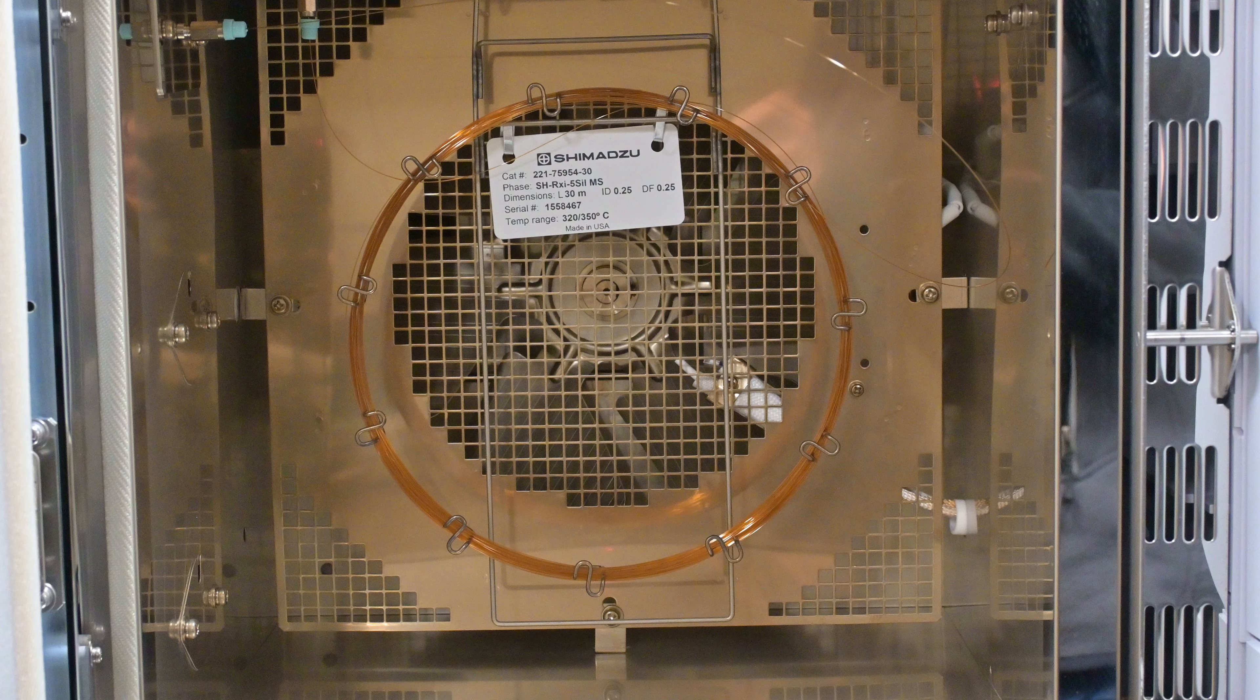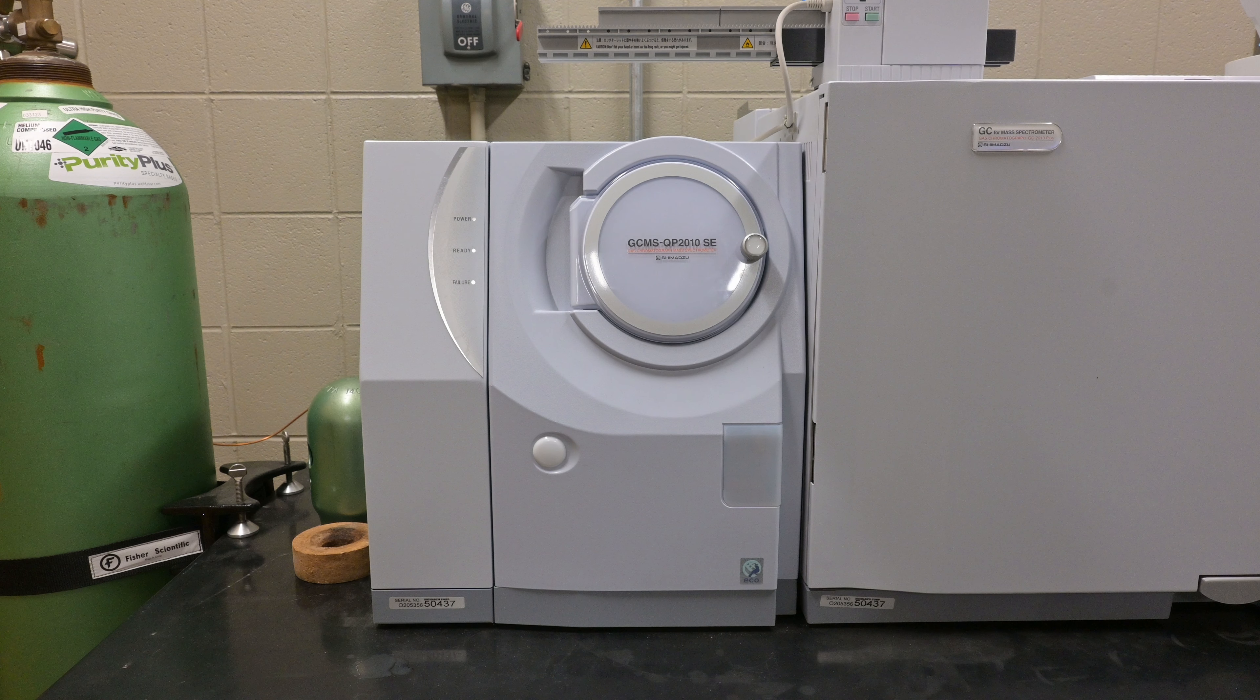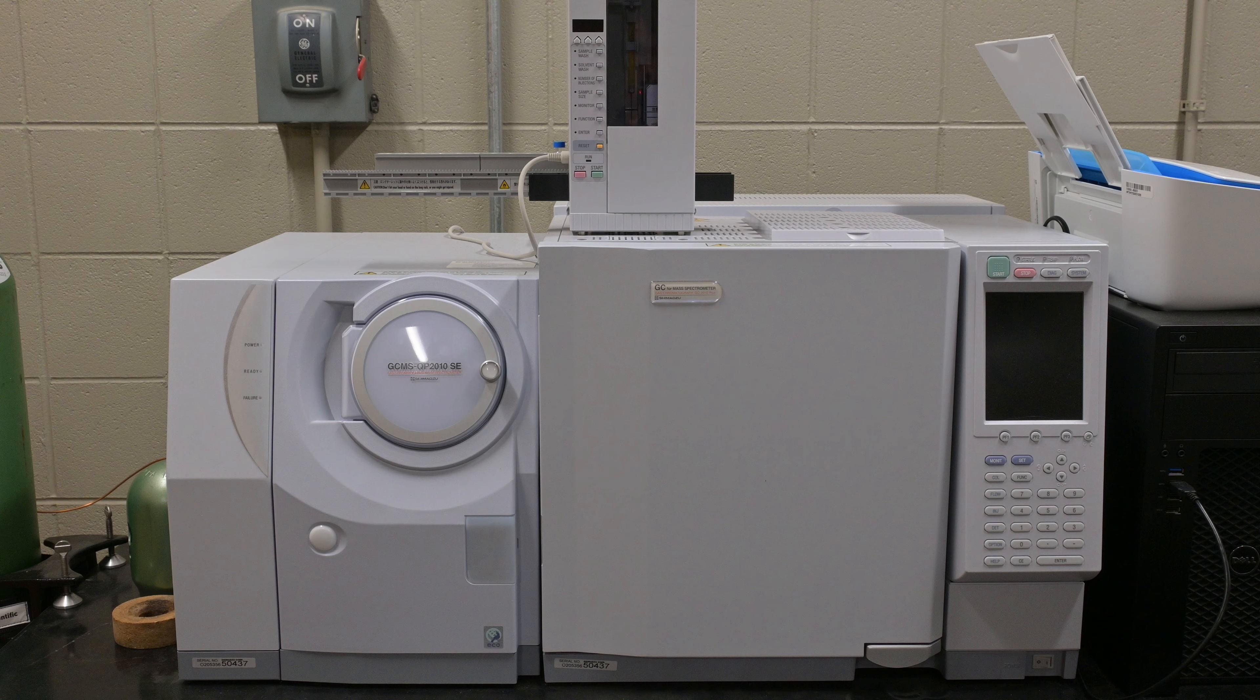Once separated, they enter the MS part, where they are ionized and fragmented. The mass spectroscopy measures the mass-to-charge ratio of these fragments, creating a unique spectra or fingerprint of each compound. This dual capacity allows GC-MS to provide highly specific and accurate identification, making it an invaluable tool for complex mixtures like DEET and its intermediates.